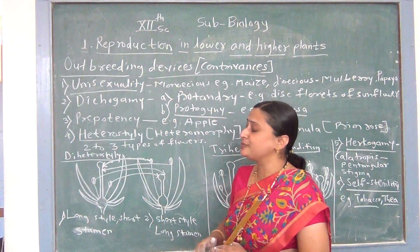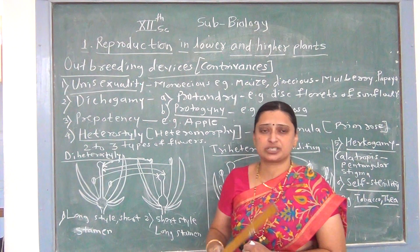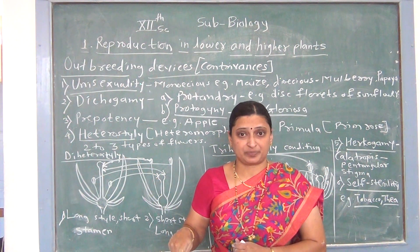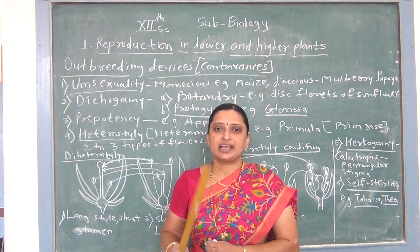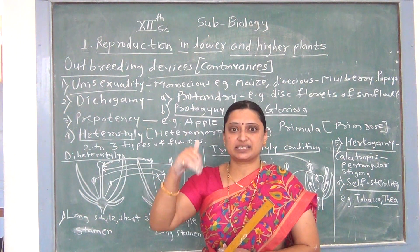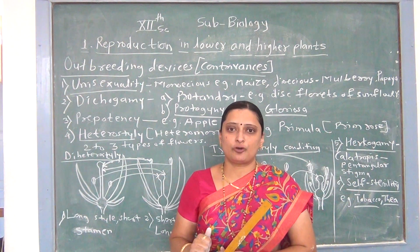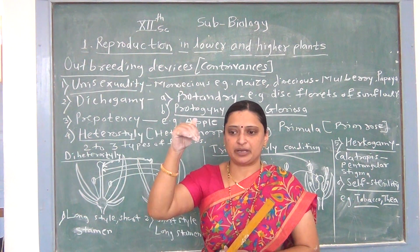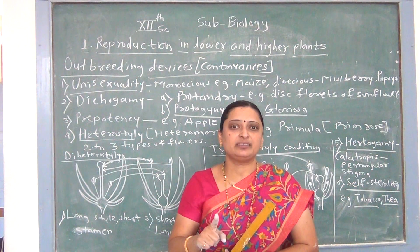There are two conditions for unisexual flowers. The first is the monoecious plant. In a monoecious plant, both male and female flowers are present on the same plant. For example, maize. In the case of maize, the top flower is the male flower and the lower flower is the female flower. This condition prevents self-pollination and encourages cross-pollination.